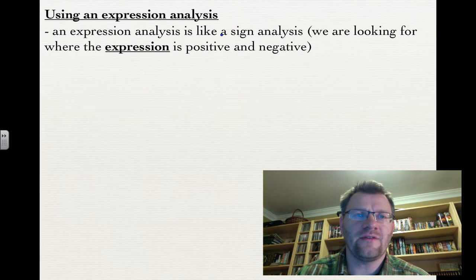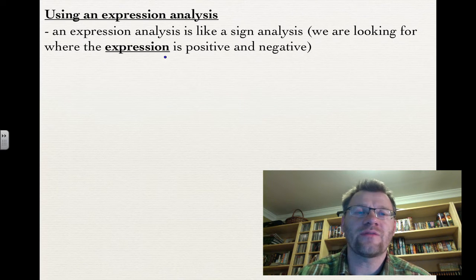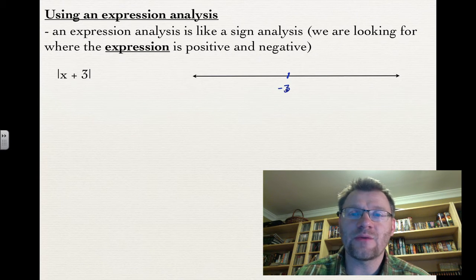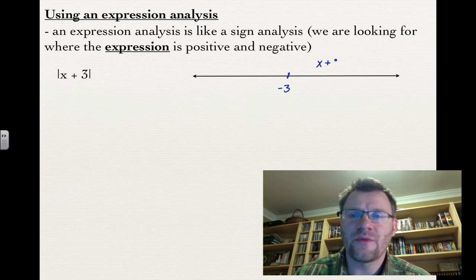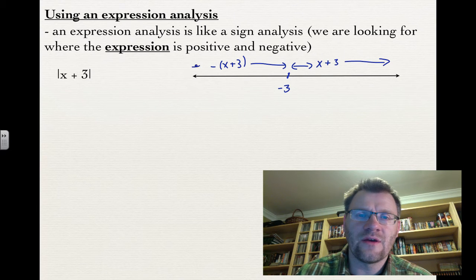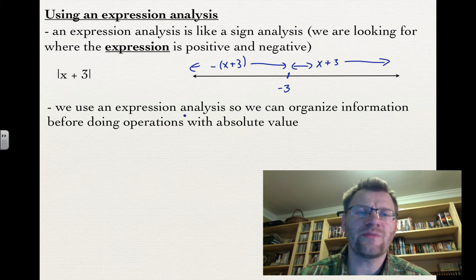Using an expression analysis: an expression analysis is like a sign analysis where we look for where the entire expression is positive and negative. For example, for the absolute value of x plus 3, we find the key value — whatever makes the expression equal to 0 — which is negative 3. On the right side of negative 3 the expression is positive, and on the left side it becomes negative (x plus 3). We use expression analysis to organize information before doing operations with absolute value.